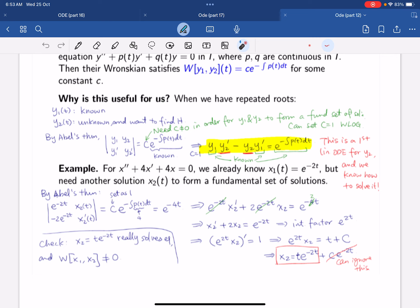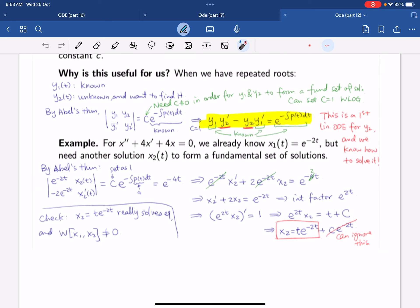For example, we have x'' + 4x' + 4x = 0. We already know x1(t) = e^(-2t), but we need another solution x2(t) to form a fundamental set of solutions. By Abel's theorem we use this equation over here. This allows us to cancel out e^(-2t), and with that we arrive at this new ODE.